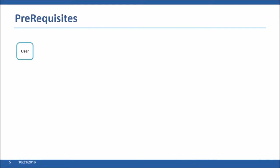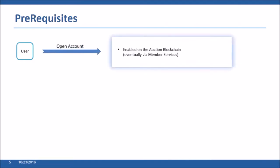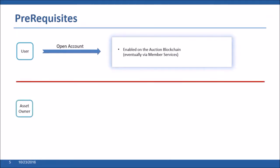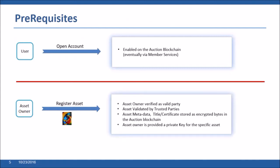In order to set up the demo, we have to load a few things. We're loading users into the blockchain — this could eventually be done externally or integrated with a directory service, but for our case we're loading in users we'll use in the demo. We also load in a series of assets. An asset has an asset owner, which would be one of our users. We have some logic that verifies the owner is a valid party, and there could be more metadata or certificates of authenticity stored about the asset. We're encrypting the digital representation of the asset and generating a private key for the asset.